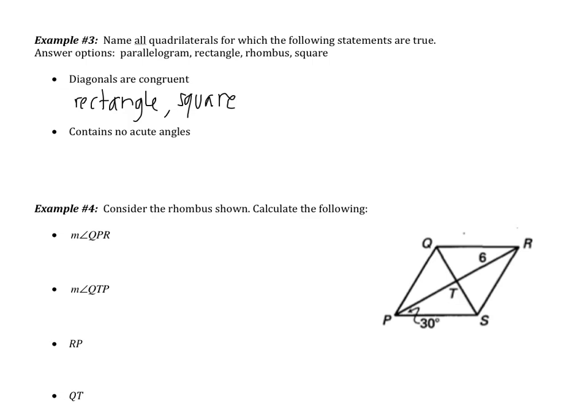The next statement: contains no acute angles. If the figure contains no acute angles, it means no angles under 90 degrees. We can't have four angles all over 90 degrees, so really this is saying there are four 90-degree angles — four right angles. Again, this is a rectangle, and because it's a rectangle, it's also a property of a square.